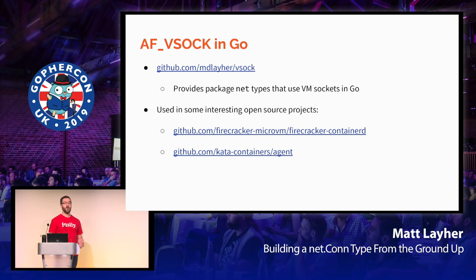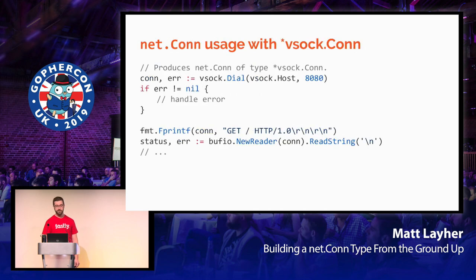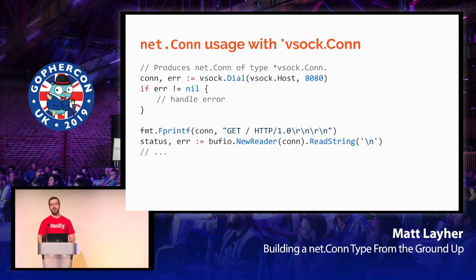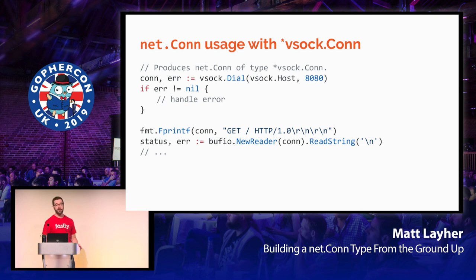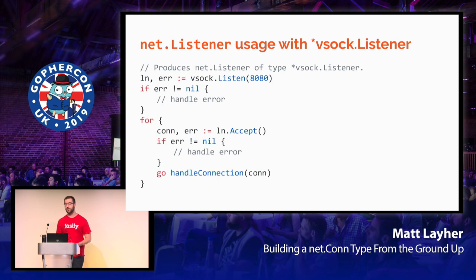If you'd like to use VSOCK in Go, I've done a lot of the hard work for you — check out my VSOCK package. It provides the Package Net types we're going to discuss today to use VM sockets in Go, and it's already used in interesting open source projects such as Firecracker, containerd, and the Kata Containers agent. Instead of calling net.Dial, we now call vsock.Dial, dialing a connection to the host hypervisor on port 8080, and we can issue a raw HTTP request over VSOCK using the same methods. On the server side, we swap net.Listen for vsock.Listen on port 8080, then loop accepting connections and spinning them off into goroutines.